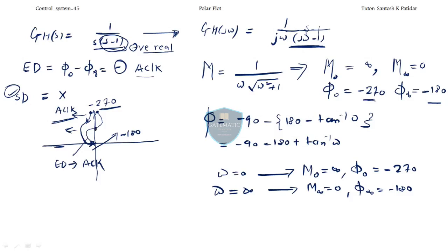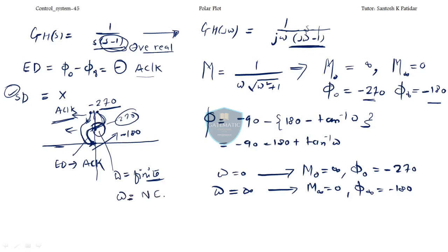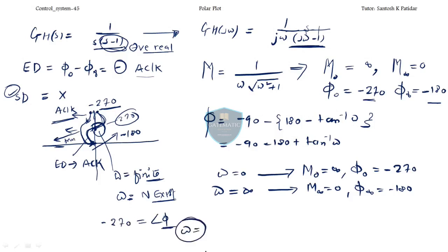So we draw the approximate plot. The graph may go one way or another — you check by substituting minus 270 degrees into the phase equation of the system and seeing if the resulting omega is valid. If the omega you get is a finite positive value, then that graph shape is valid. If the omega is not existing or invalid, then the other shape is correct. This way you can determine the true shape of the polar plot.